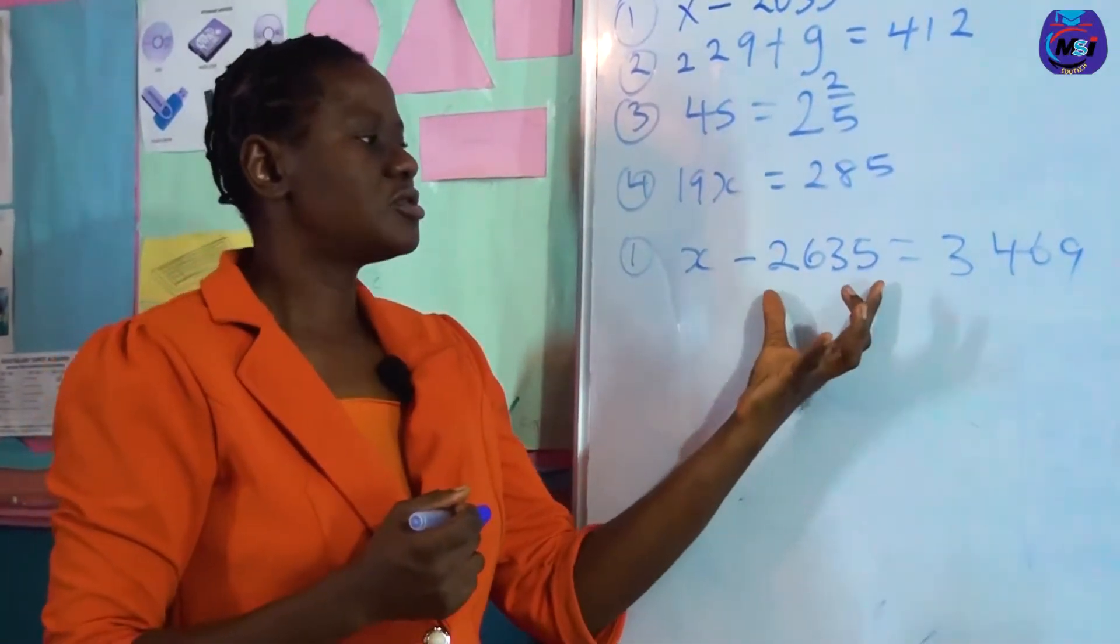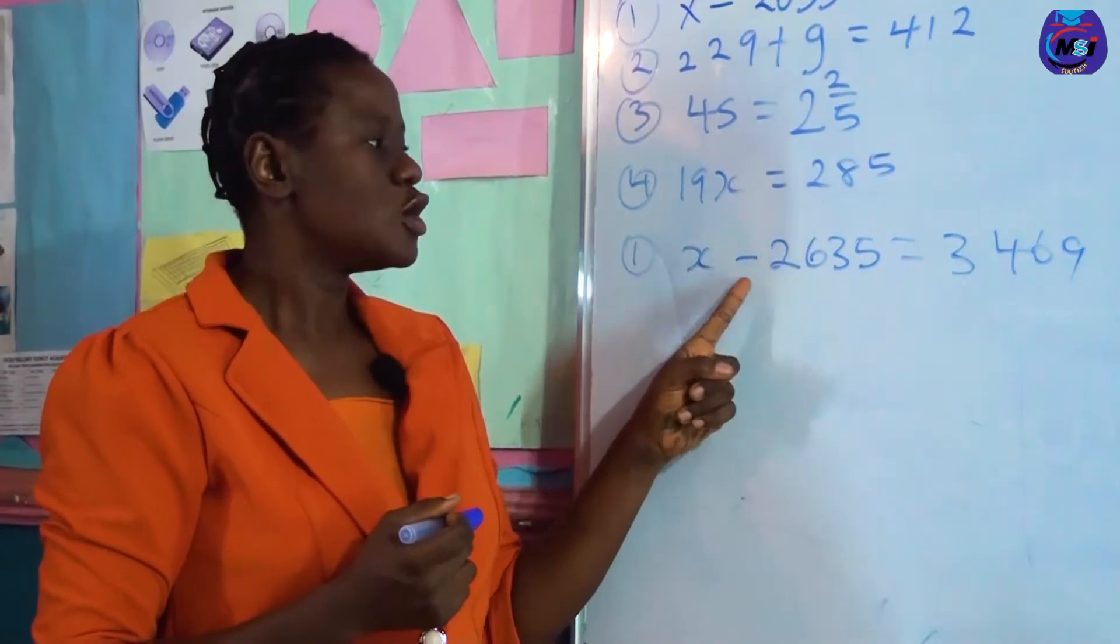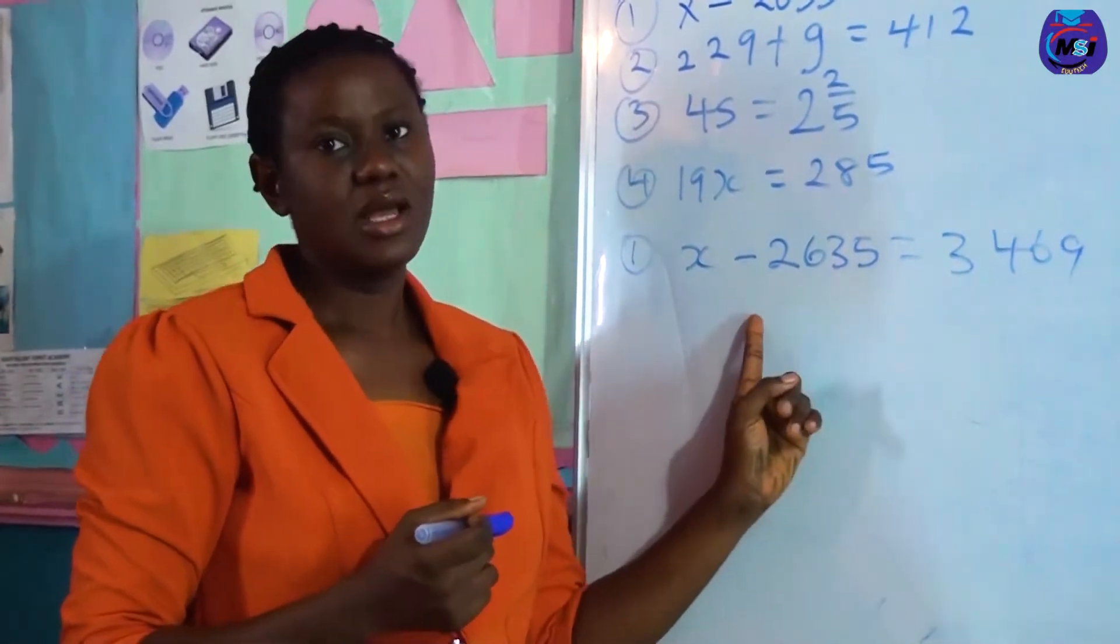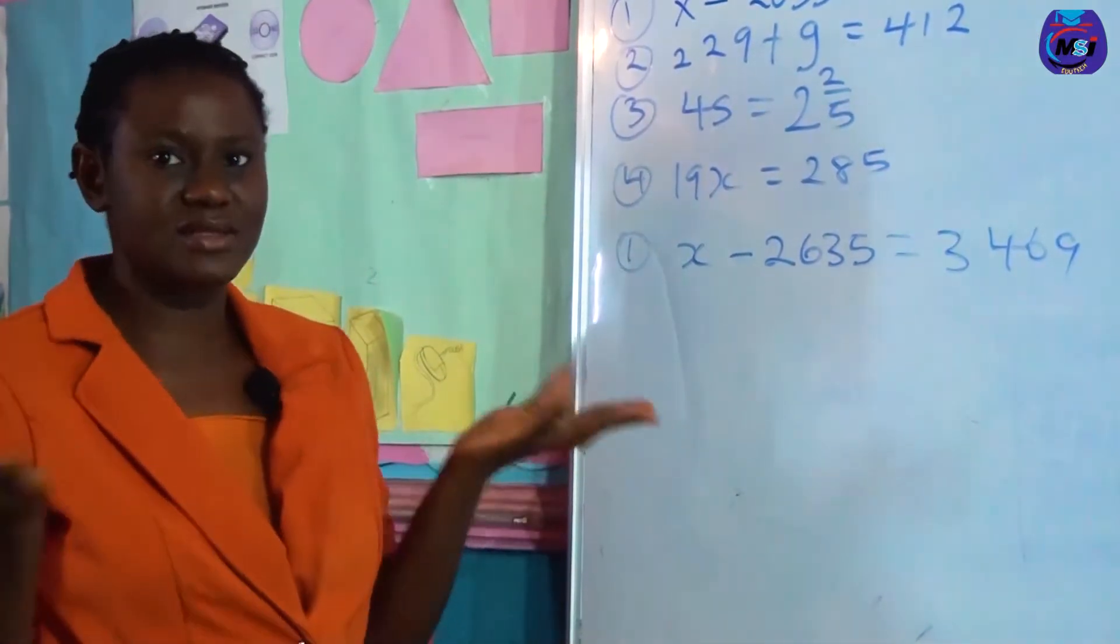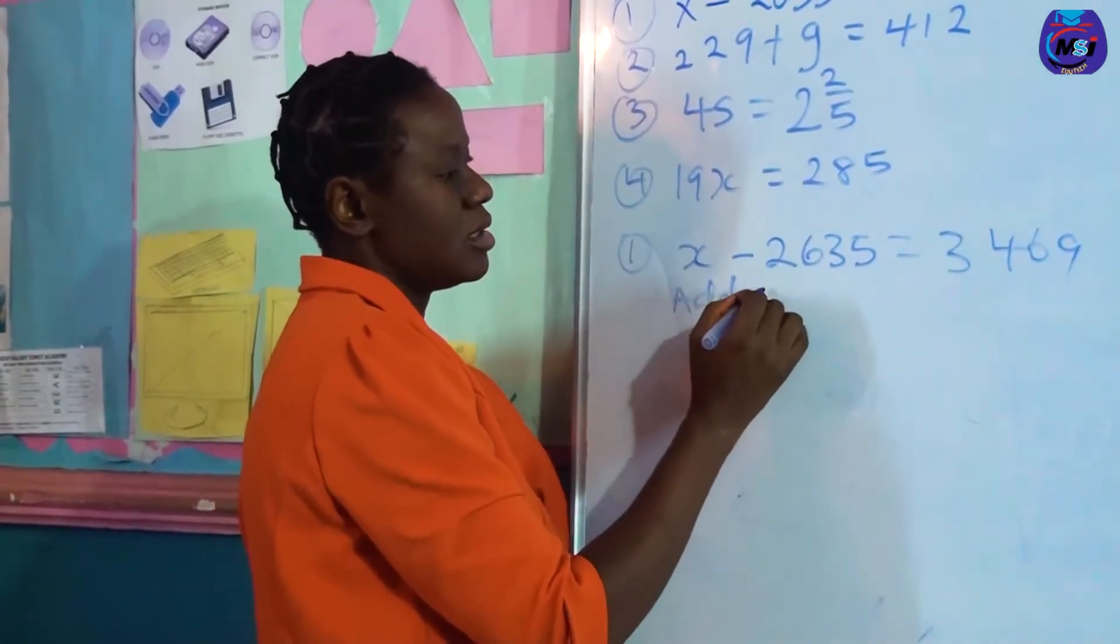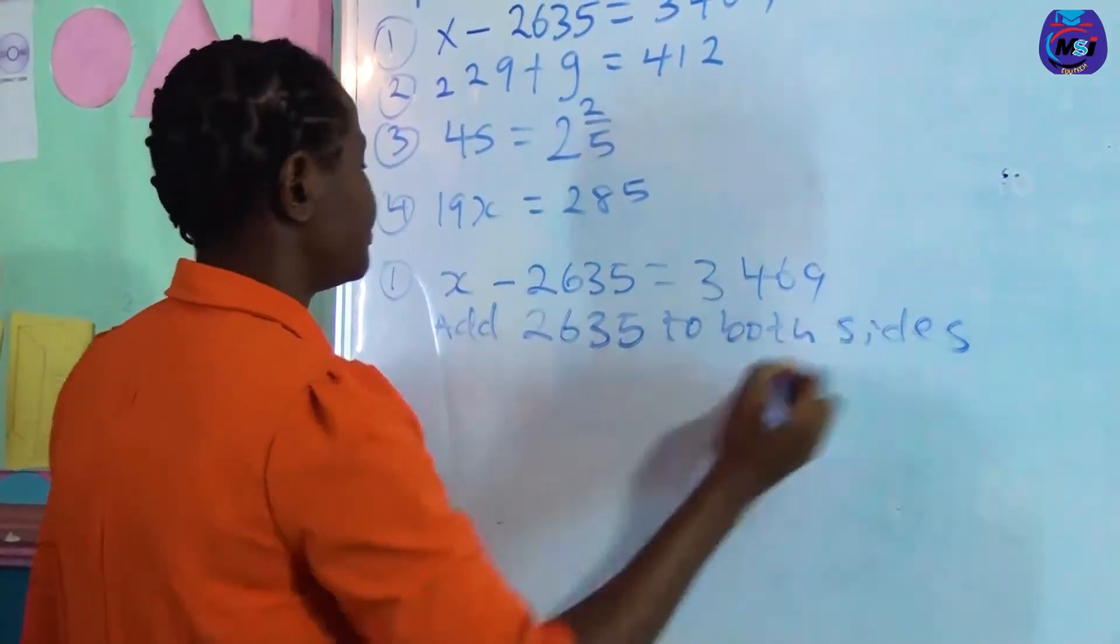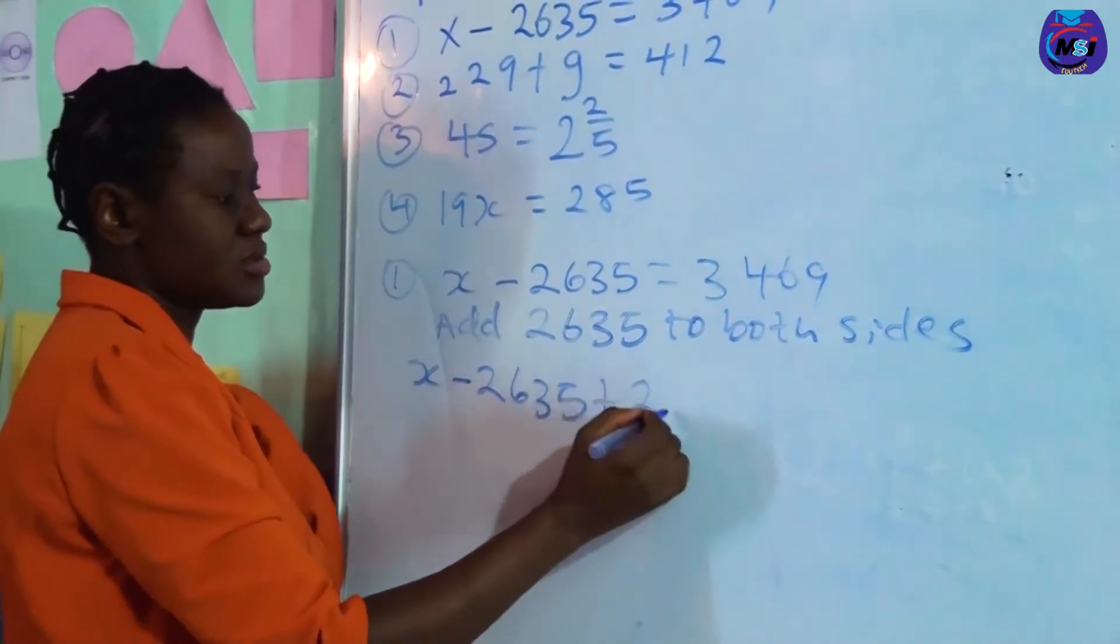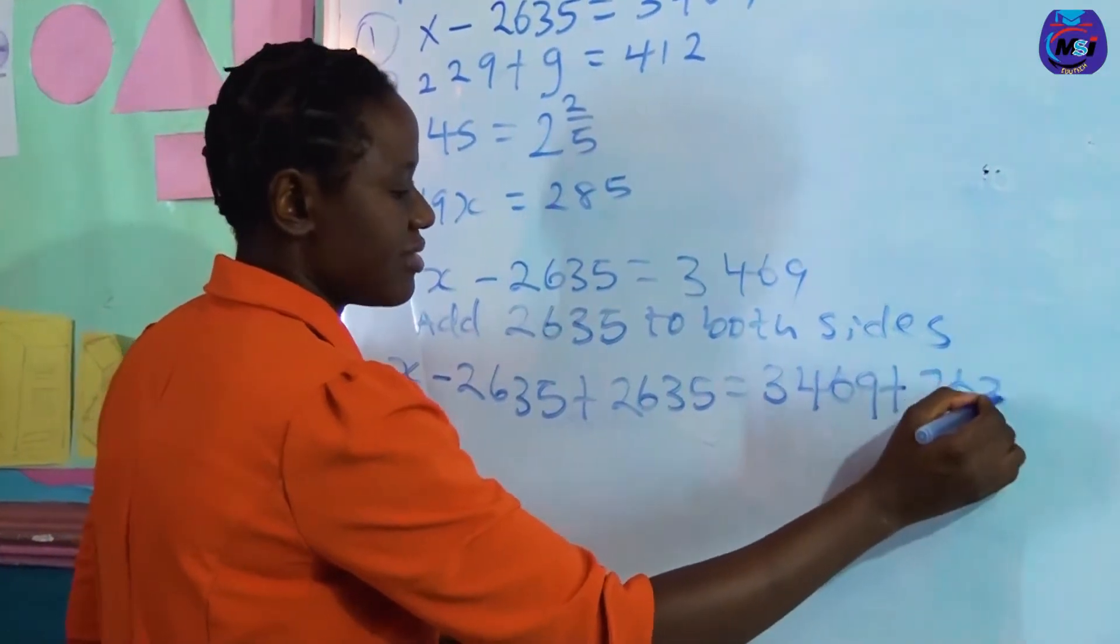We need x to stand alone. In this case x is not standing alone, so we need to move 2635. It's carrying a negative sign, a minus sign, so we need to add 2635 to both sides. Whatever you do to one side you have to do to the other side to make it balance, just like a seesaw. It becomes x minus 2635 plus 2635 equals 3469 plus 2635.